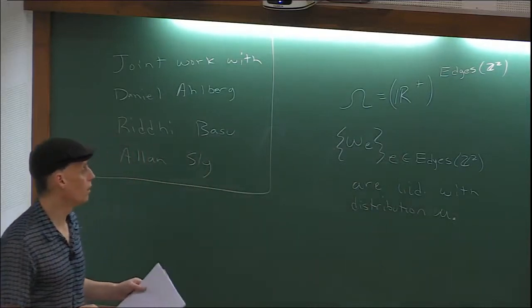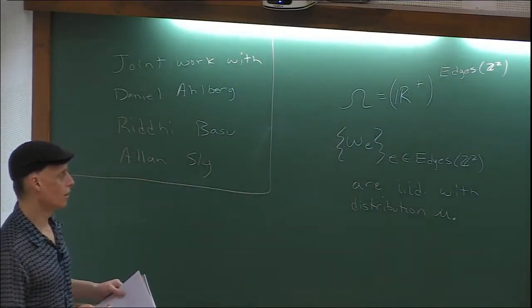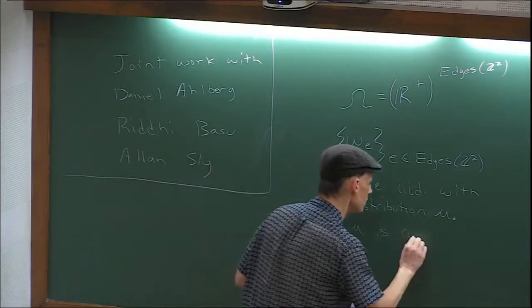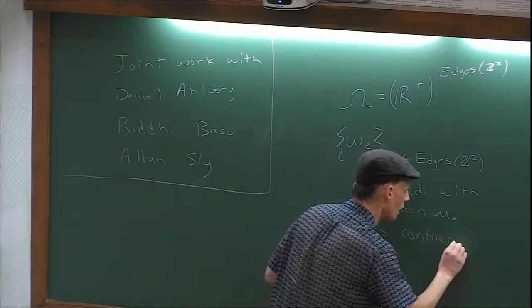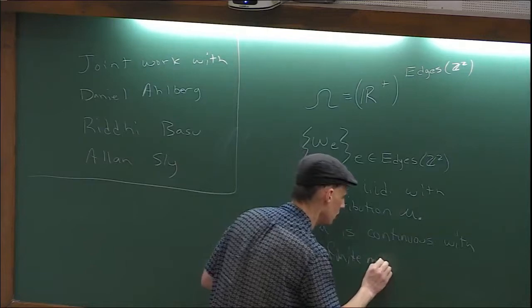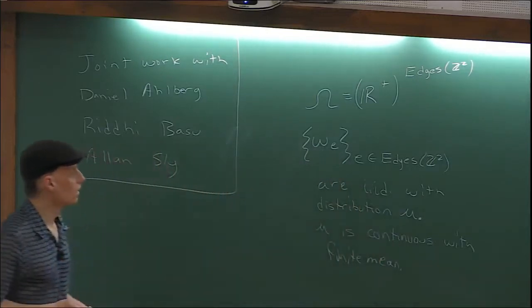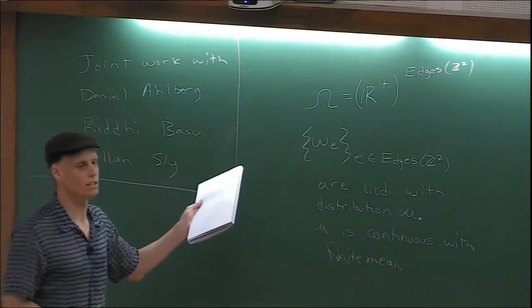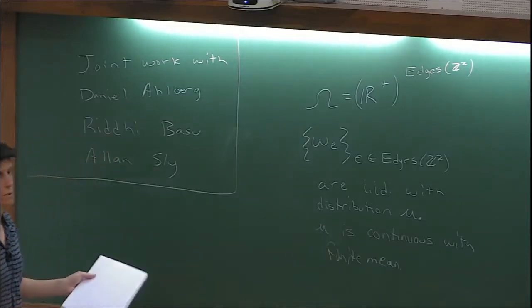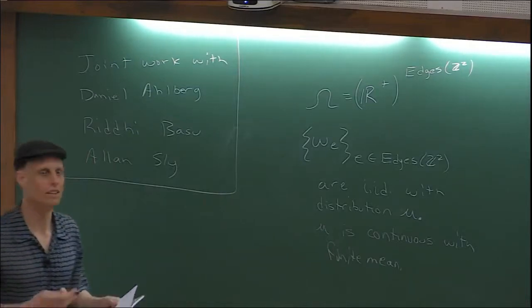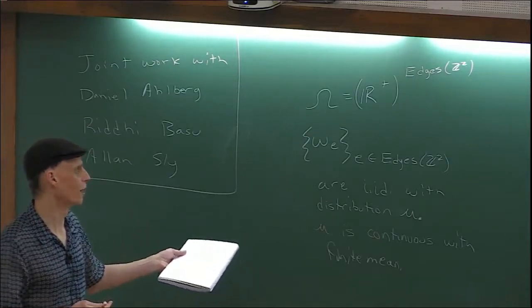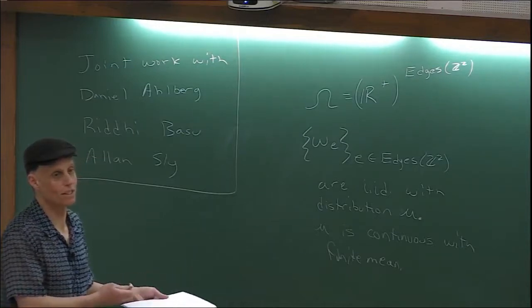What conditions do I want to put on mu? It doesn't really matter. The ones I'm going to put are: mu is continuous and has finite mean. So on each edge of the graph, I put down an independent copy of a finite mean continuous random variable. If you want to think exponential distribution, there's nothing lost.